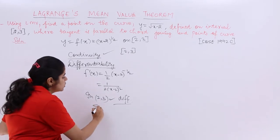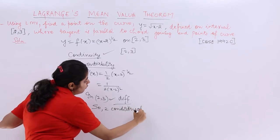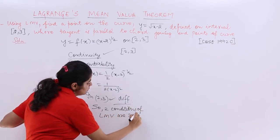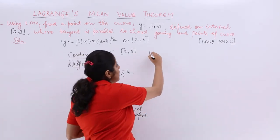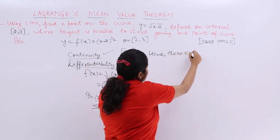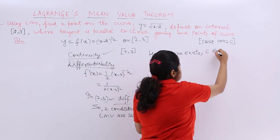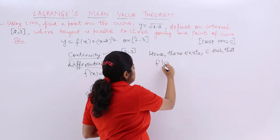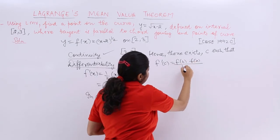So the two conditions of LMV are satisfied. Hence, there exists a value c such that f'(c) = [f(b) − f(a)] / (b − a). That is the statement we apply now.